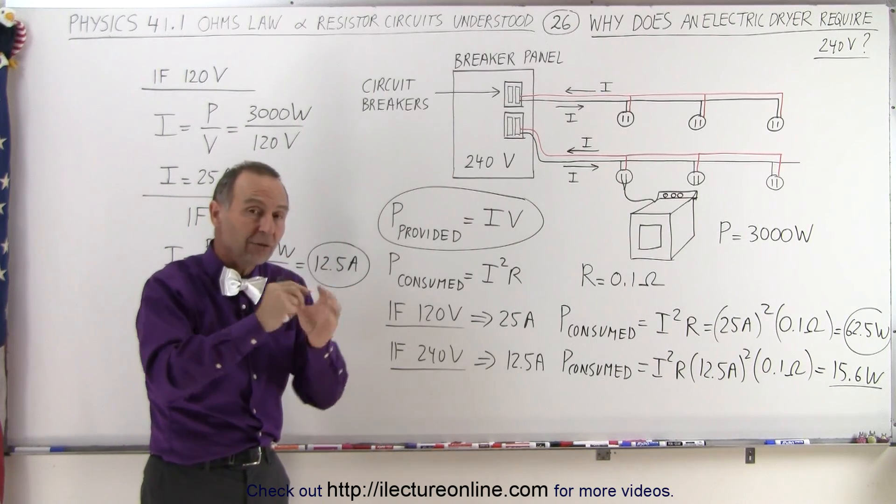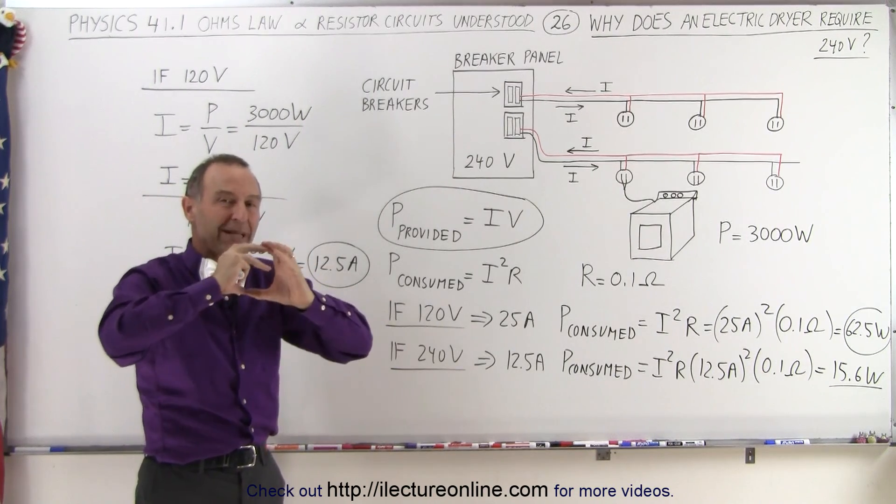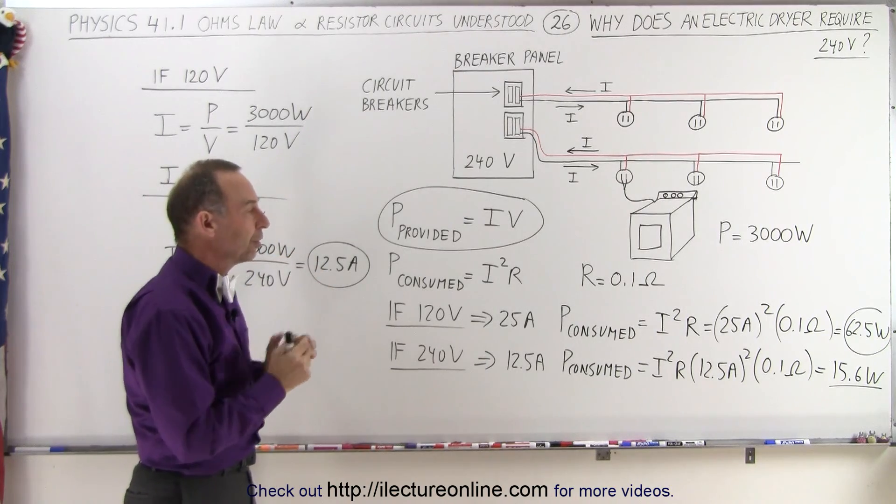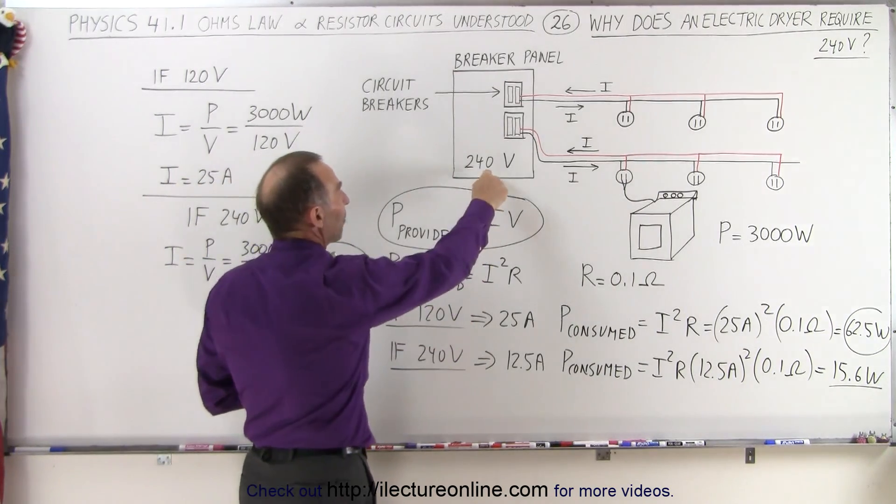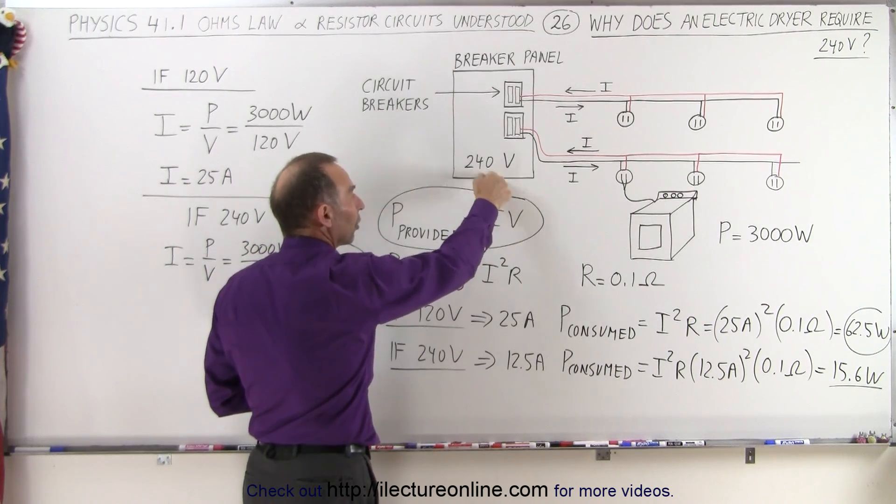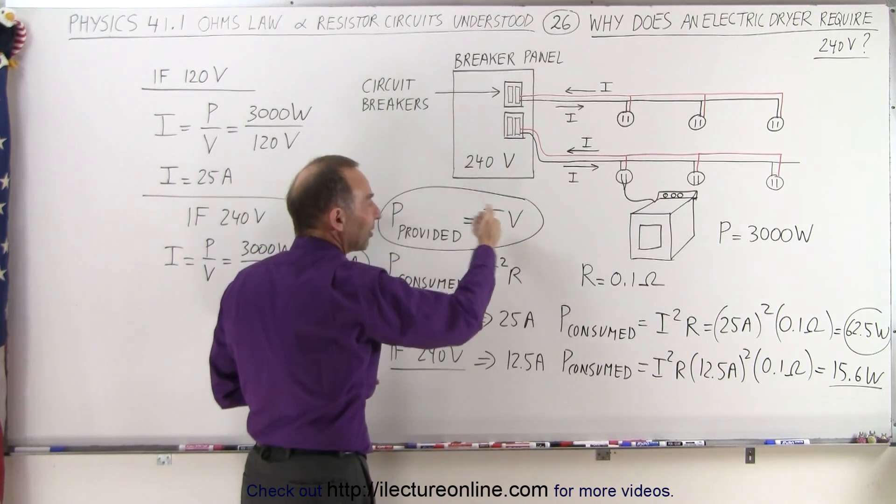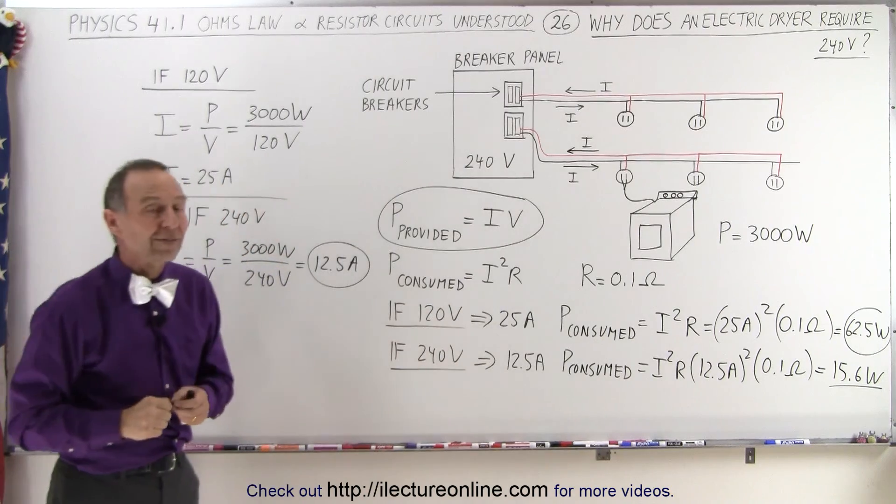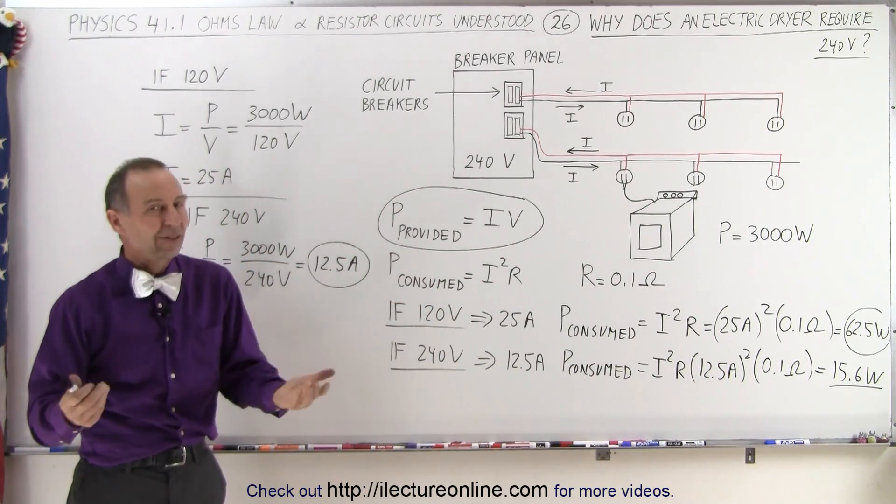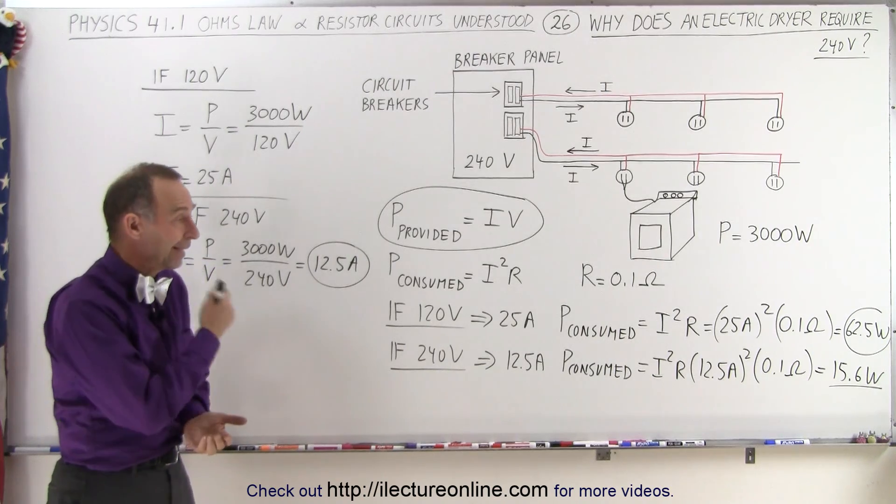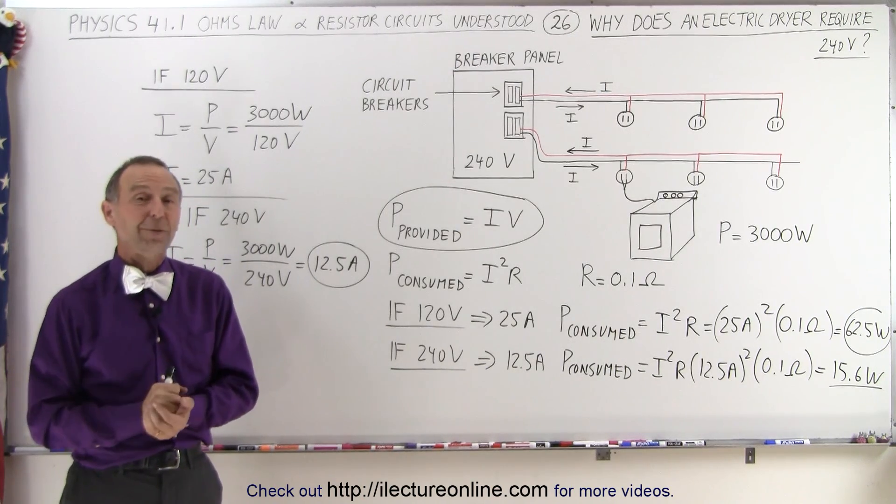So the more current we expect has to flow through the wires, the bigger they want to make the wires - the bigger the gauge, the bigger diameter of the wire - so that there'll be less resistance. And also they have a bigger voltage source, a greater voltage source, so that there's less current required to run the appliance. And again, less current means less power consumed by the wires and less chance of a fire starting. And that's why it's done that way.